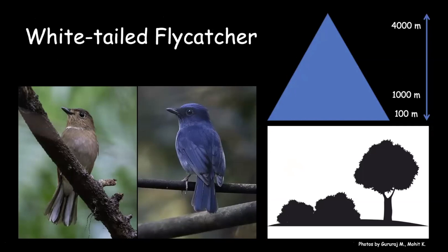Similarly, the white-tailed flycatcher in northeast India is an extremely difficult bird to find, mainly found south of the river Brahmaputra. It has a very distinct fat bill. The nesting of this bird has been a mystery — no one really knows the clutch size, and there are contrasting evidences in literature about whether they breed on trees or road cuttings.